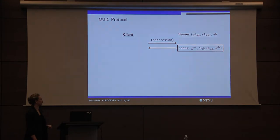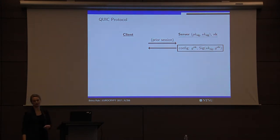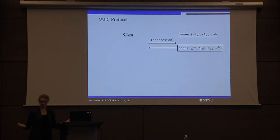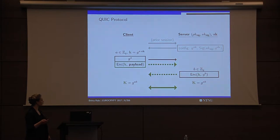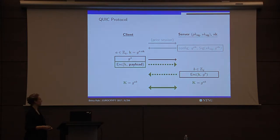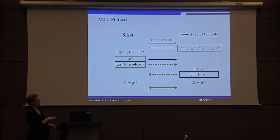What does QUIC look like? Essentially, there is a medium-lived key, this SK, which is part of a server configuration file. During some prior session, this is sent from the server to the client. Then later, when the client wants to reconnect, it uses this to compute a temporary key — a zero RTT key. This is basically a Diffie-Hellman with its own choice of ephemeral value. Later, the server can choose its own new ephemeral and we eventually end up with a solid session key. But immediate encrypted data can be sent in these flows.